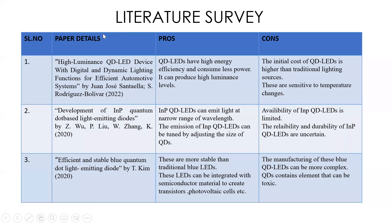The first paper in the literature survey is on luminescence QD LED devices with digital and dynamic lighting functions for efficient automotive systems, published in 2022. The pros are that QD LEDs have high energy efficiency and consume less power, and can produce high luminance levels. The cons are that the initial cost of QD LEDs is higher than traditional lighting sources and they are sensitive to temperature changes.